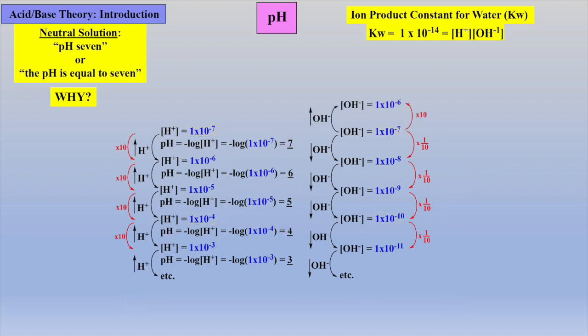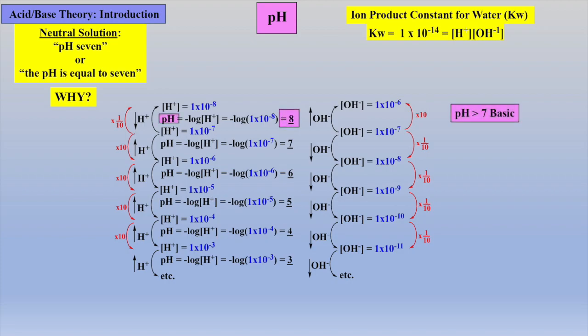Now, let's increase the hydroxide ion concentration by an order of magnitude, or by 10 times when compared to neutral pH, which will decrease the concentration of protons by the same amount. Taking the negative log of 1 times 10 to the minus 8 yields a pH of 8. Thus, any pH greater than 7 is considered basic because hydroxide ion concentration is now greater than proton concentration.